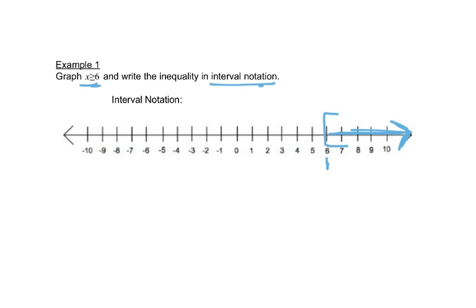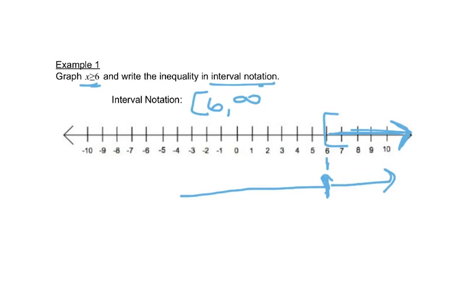For interval notation, we start reading from left to right. The first thing we hit is 6, so we write a bracket with the 6, and then it keeps going forever to the right, which means we put infinity. Infinities always have parentheses. So the interval notation is bracket 6, comma, infinity with a parenthesis.